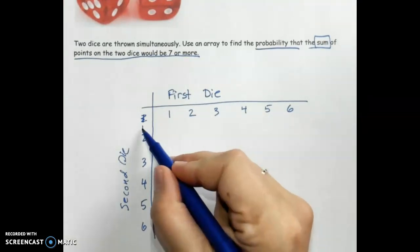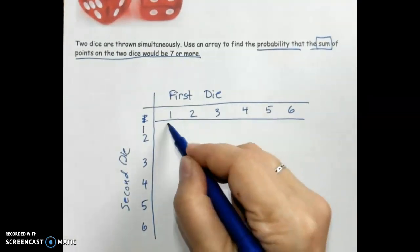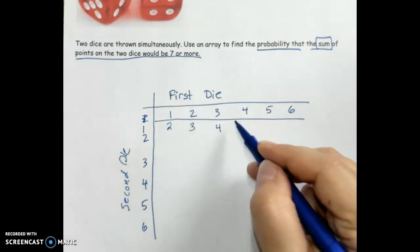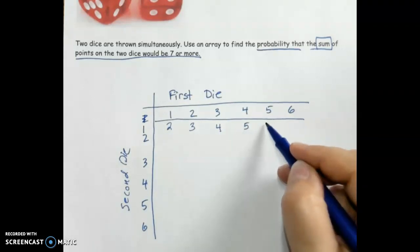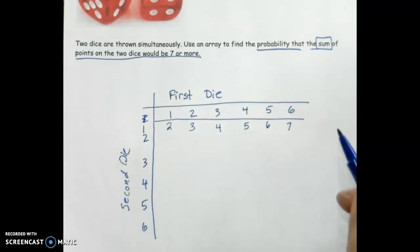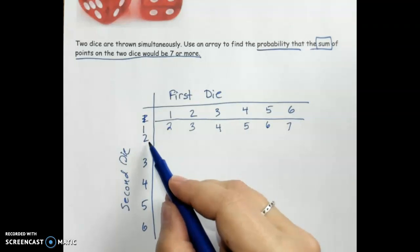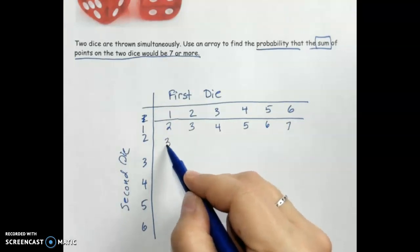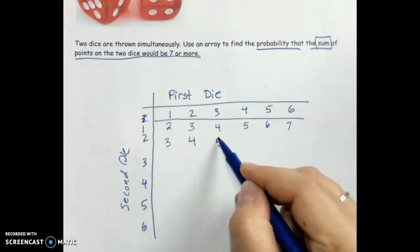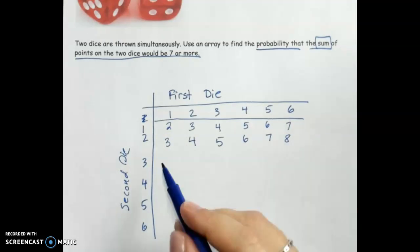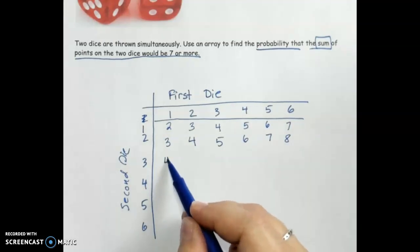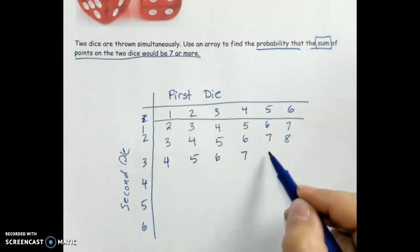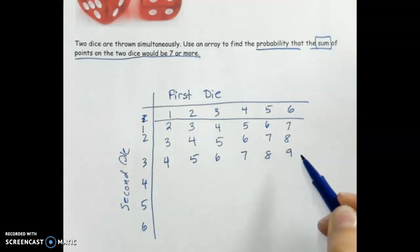If I roll a one and a one, the sum is two. One plus two is three, one plus three is four, one plus four is five, one plus five is six, one plus six is seven. Moving to the twos: two plus one is three, four, five, six, seven, and eight. For the threes: three plus one is four, three plus two is five, three plus three is six, seven, eight, and three plus six is nine.